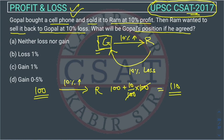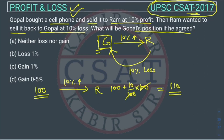Ram didn't like the mobile, or after some time he sold it back to Gopal. He is saying to Gopal: buy this mobile at 10% loss. So Ram is again selling this to Gopal at 10% loss, and we will calculate the loss over Ram's price of 110, because that is Ram's cost price.